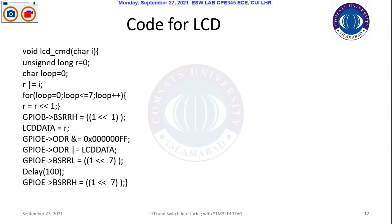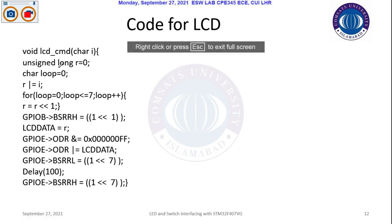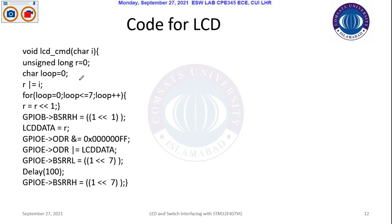There is a function for command, so I will just look at the respective value of the data and call this function. If I send data, I will call the data function. The basic difference is that I will set the register select pin accordingly. If you see here, we have set the register select pin here.